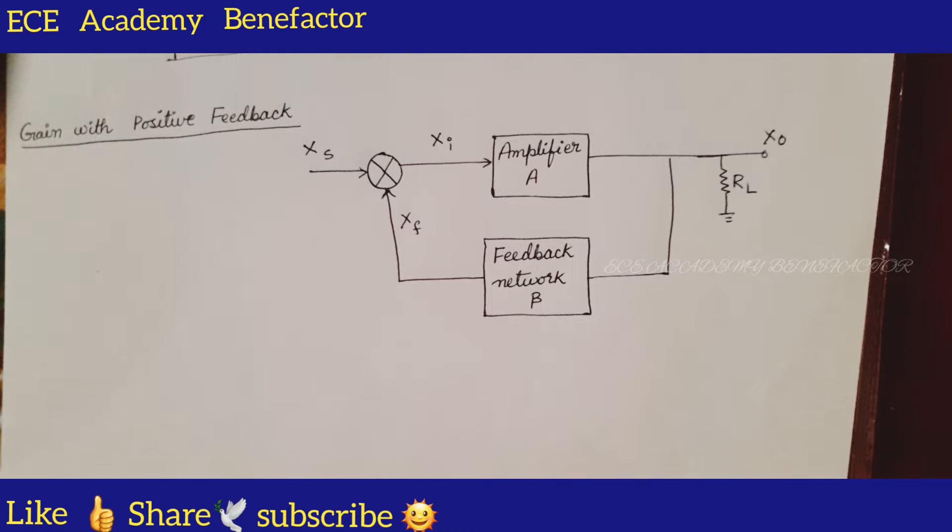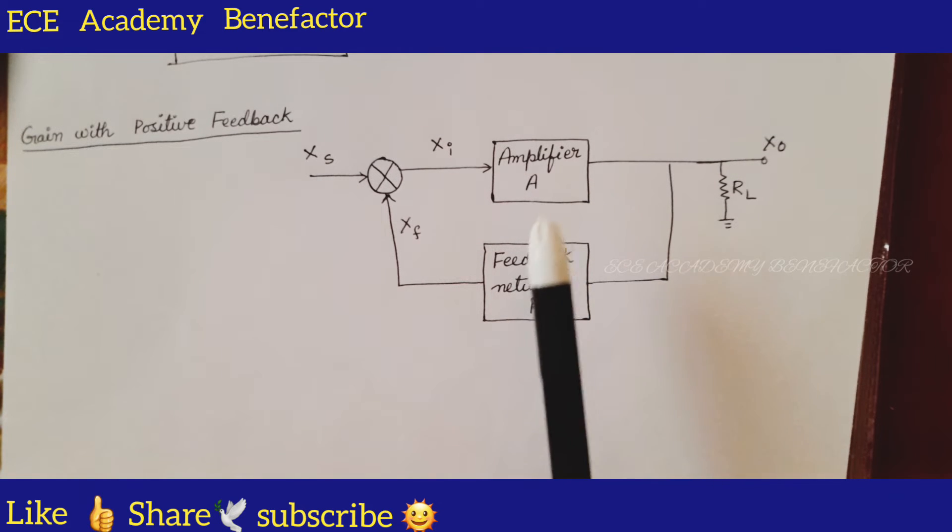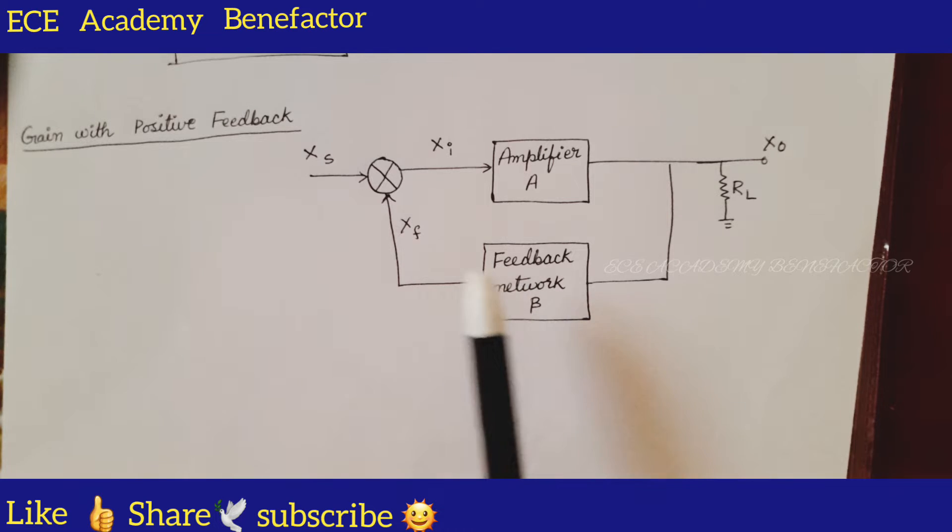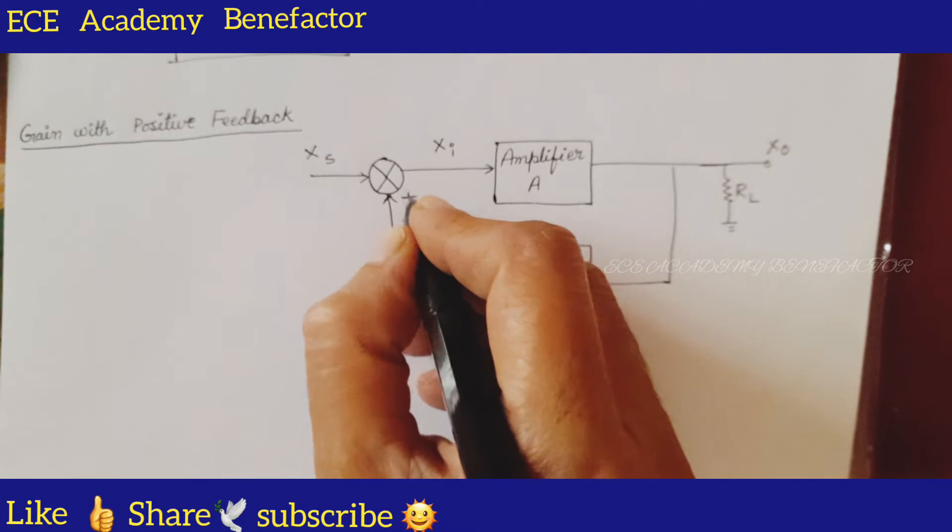This is a block diagram of positive feedback with an amplifier of gain A and a feedback network of ratio beta. In this, the feedback signal is in phase with the incoming input signal.